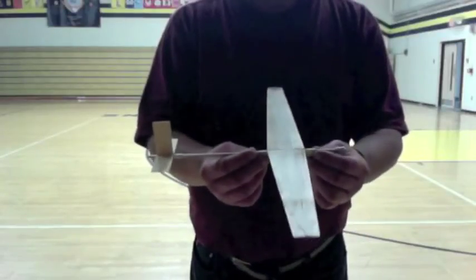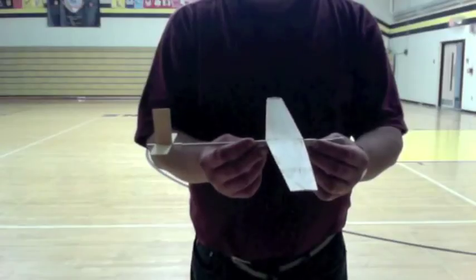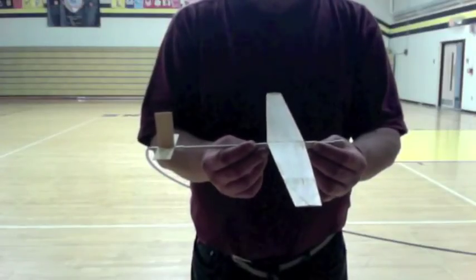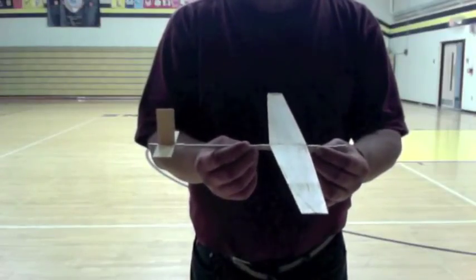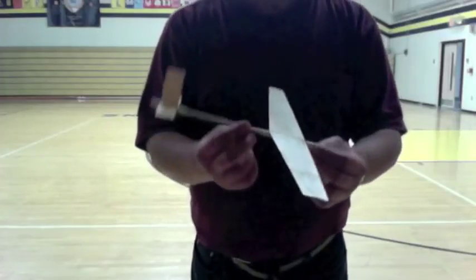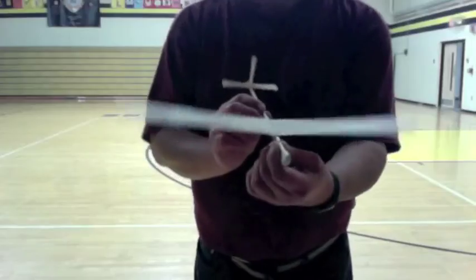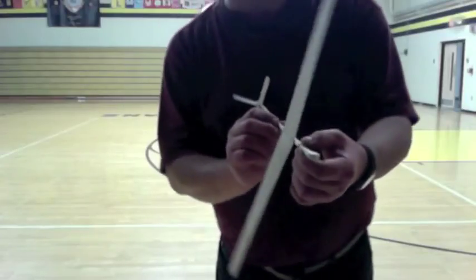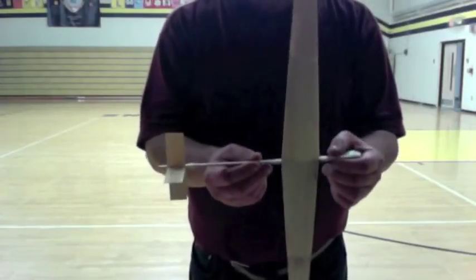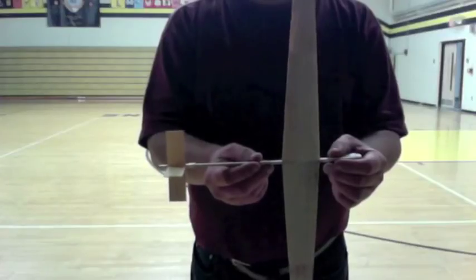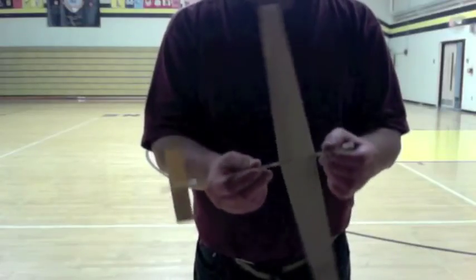You should also know that there are three axes that the airplane flies with. The pitch axis, which is up and down this way. The roll axis, which is left and right this way. And then the yaw axis, which is left and right this way.